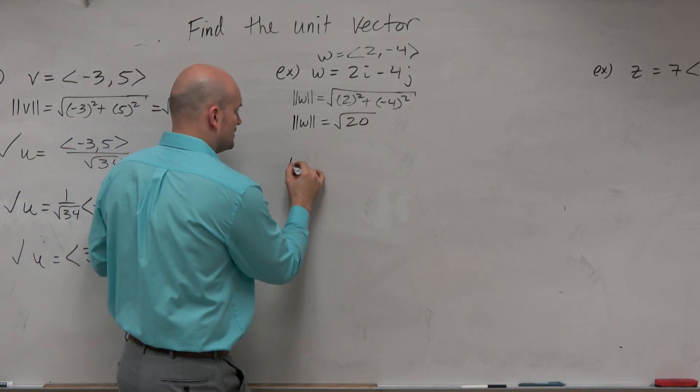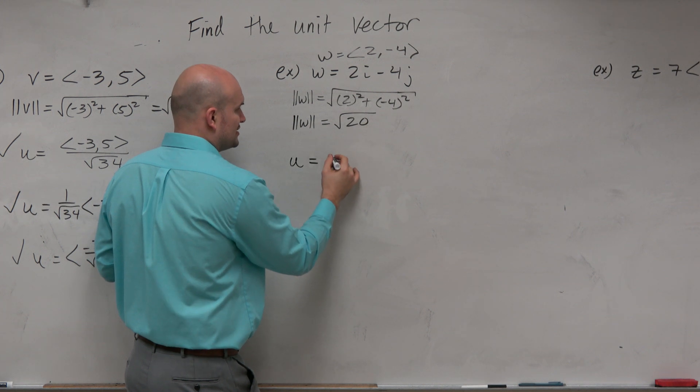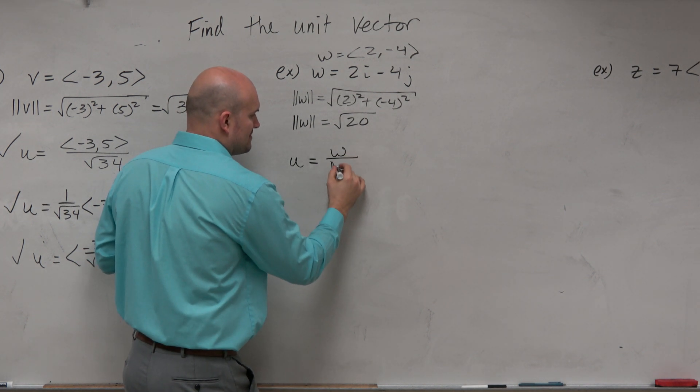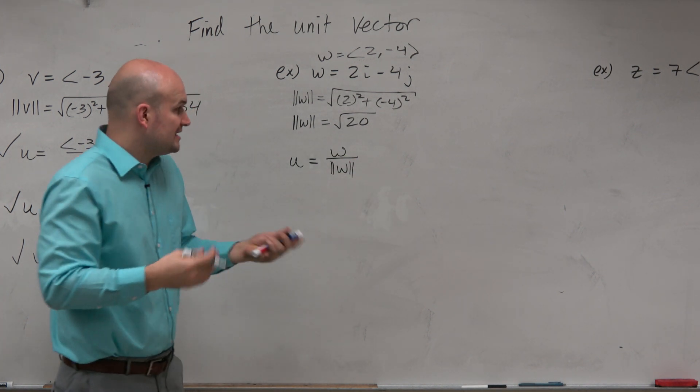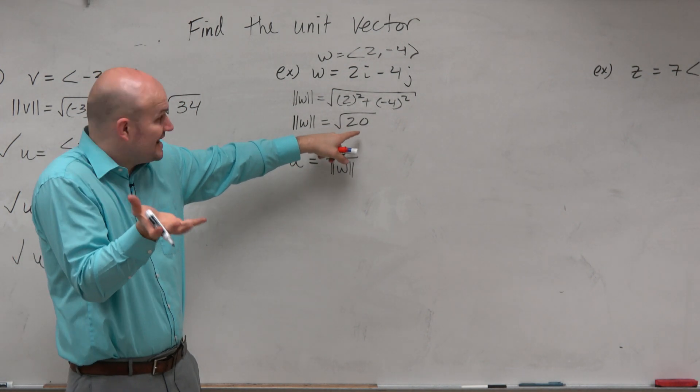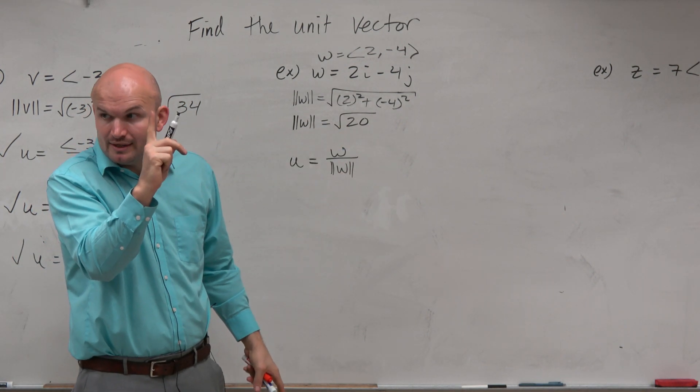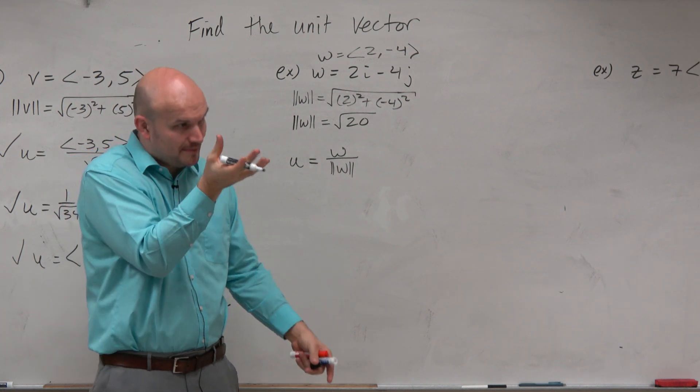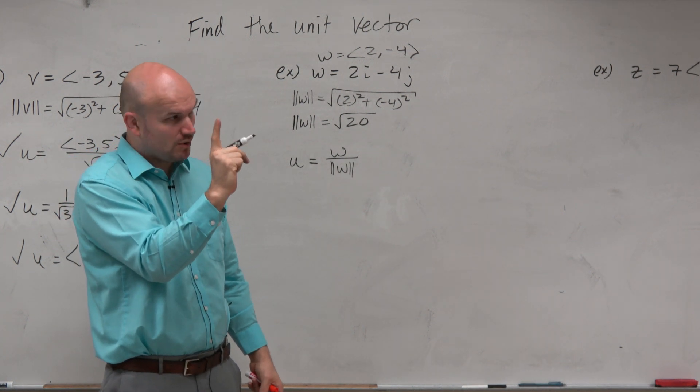So the unit vector is simply this vector w divided by its magnitude, because if you divide the length by 20, you're going to now have a magnitude of 1. If you take the square root of 20 divided by square root of 20, you get 1, which is what we're looking for.